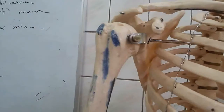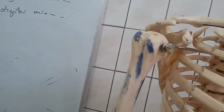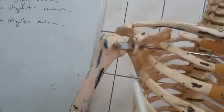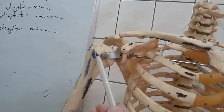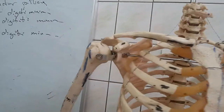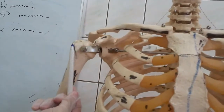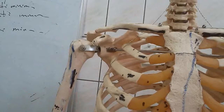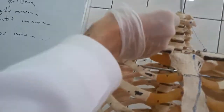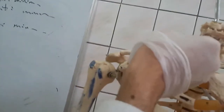Now, attachments of the humerus. This is the lesser tuberosity, where subscapularis inserts. On the greater tuberosity, supraspinatus attaches superiorly.